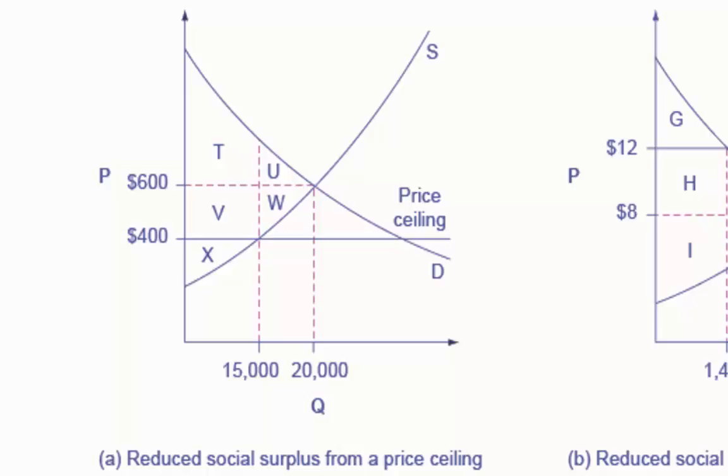A price ceiling is imposed at $400, so firms in the market now produce only a quantity of 15,000. As a result, the new consumer surplus is T plus V, while the new producer surplus is only X. U and W represent what economists term deadweight loss, caused by an inefficiency in the market.